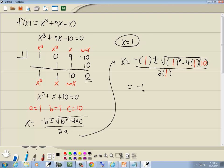Well, negative 1 plus or minus square root, 1 squared is 1, minus 4 times 1 times 10, that's 40, all over 2 times 1, which is 2. That gives us negative 1 plus or minus, 1 minus 40 is negative 39 over 2.